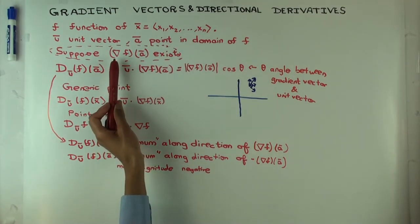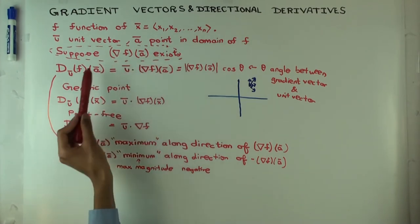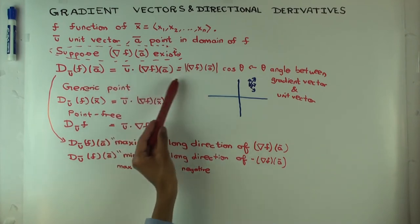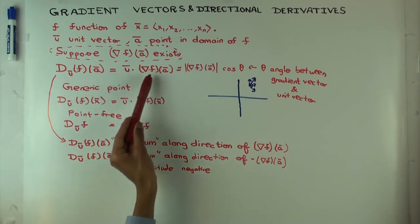So the key subtlety is this condition: if the gradient vector exists, then the directional derivatives are given in these terms, in this manner.